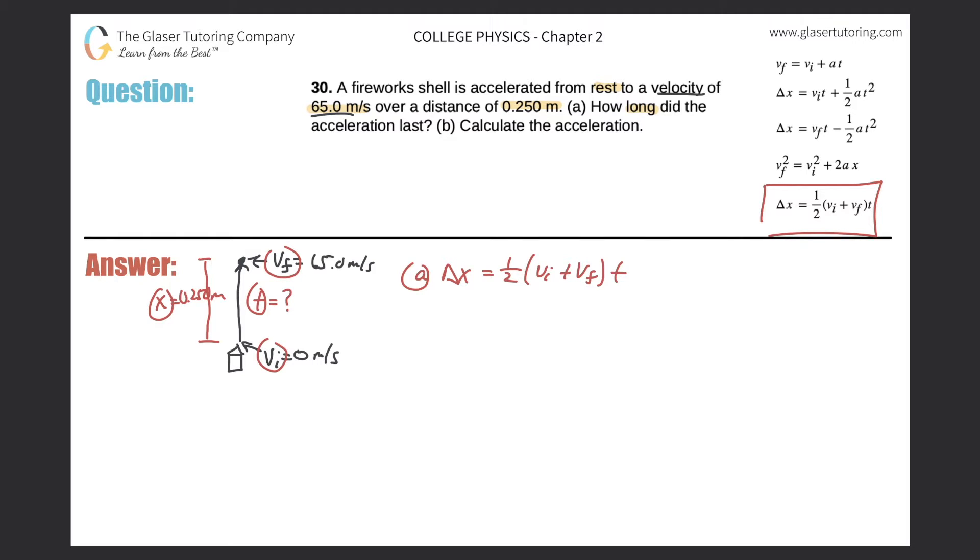So the displacement they told us was going to be 0.250. It's one-half then times the initial velocity, which is 0, plus the final velocity, which is 65.0, multiplied now by my variable t. So let's just clean things up a little bit. So this is 0.250, and it's now 65 plus 0. Then just use your calculator if you need, 0.5 multiplied by 65. That should come out to 32.5.